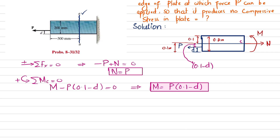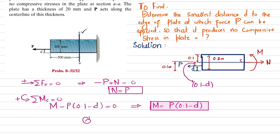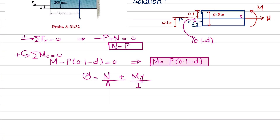This is the moment equation. Now we have two stresses: one due to the normal axial force and one due to the bending moment. Transferring the force to the centerline gives P plus a moment — this is combined loading. The normal stress formula is sigma equals N over A plus or minus M times y divided by I. We will first find the section properties: area and moment of inertia.